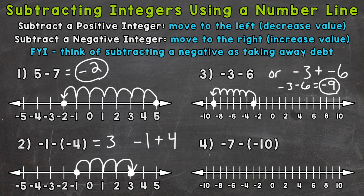And lastly, number four, we have negative seven minus negative ten. Again, we're subtracting a negative integer, therefore increasing in value. We are taking away that debt or loss of negative ten. So we'll start at negative seven.